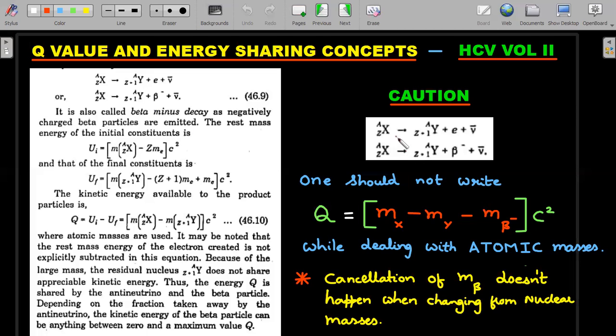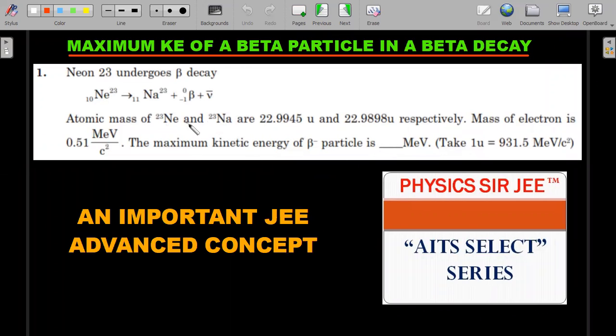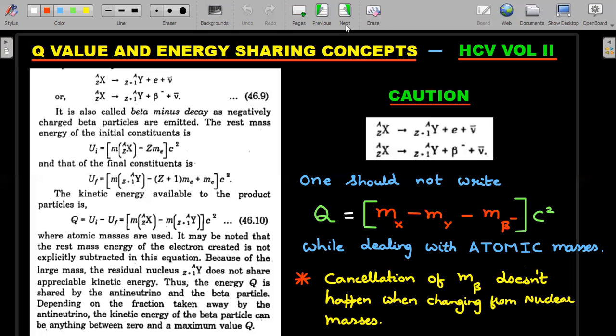The caution I would like to talk about here is whenever this particular equation is given, X gives rise to Y plus beta plus neutrino, we should not directly subtract these numbers. The tendency for students is to take mass of X minus mass of Y minus mass of beta. Neutrino's mass is negligible, it's not zero but negligible. A lot of students write this subtraction, taking this as the Q value which leads to a mistake. The reason is these subtractions are supposed to be taken if these are nuclear masses. But since the information given in most questions is atomic masses, you can't directly do this. You could see the examiner trying to lead you into committing a mistake by giving the three masses here, even electron. If you include this you'll end up getting a wrong answer.